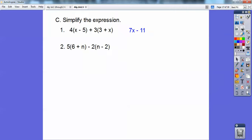All right, now this one here, distribute the 5 through and distribute the negative 2 through. Go ahead and you do it first. And then so this is going to get me 30 plus 5n. Over here, this is going to get me negative 2n plus 4. And then combining like terms, you get 3n plus 34.